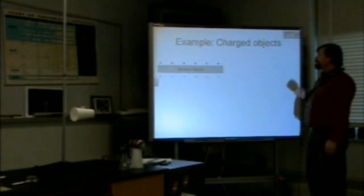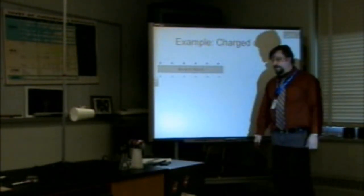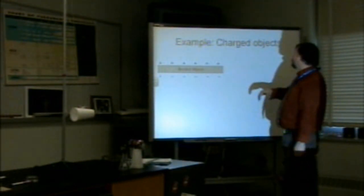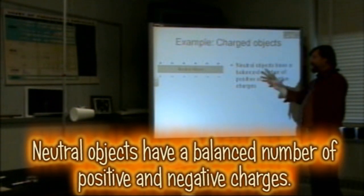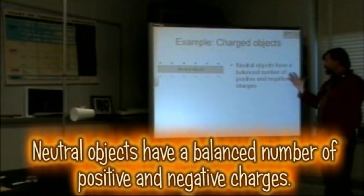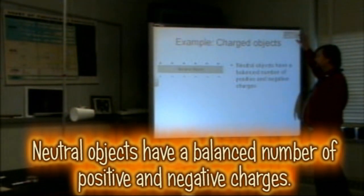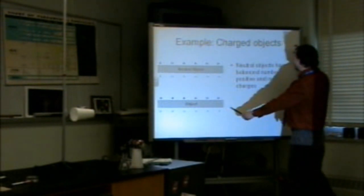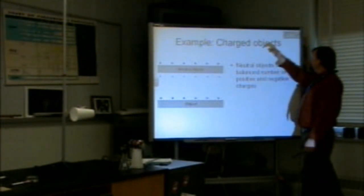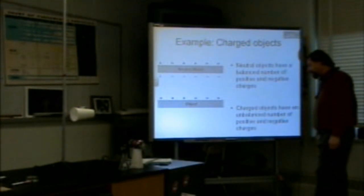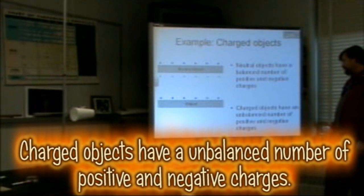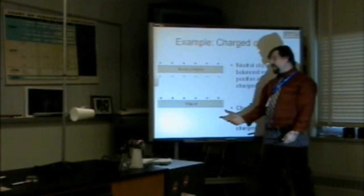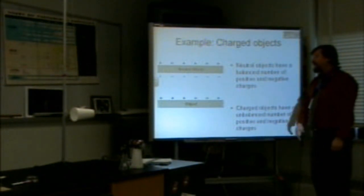We have examples of charged objects. A rubber rod hanging from the ceiling originally had a neutral charge — an equal number of positive and negative elementary charges. Neutral objects have a balanced number of positive and negative charges that cancel each other out. When we take away some electrons, we end up with a positively charged glass rod. Charged objects have an unbalanced number of positive and negative charges — more positive than negative gives it an overall positive charge.